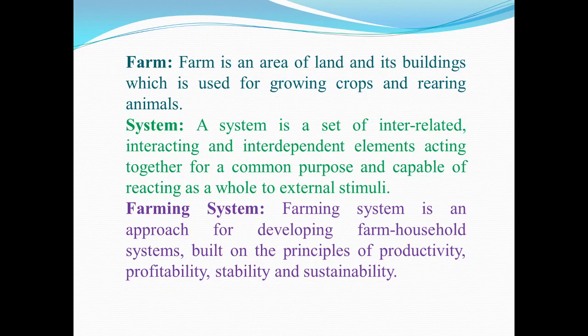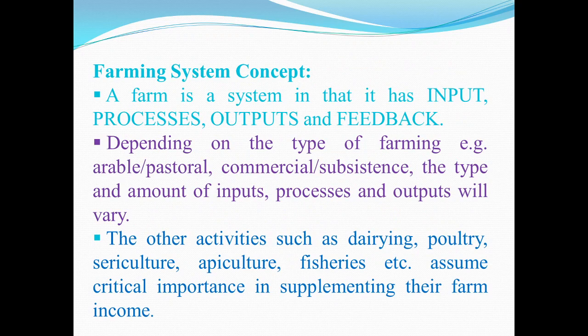Next, what is a farming system? A farming system is an approach for developing farm household systems built on the principles of productivity, profitability, stability and sustainability.